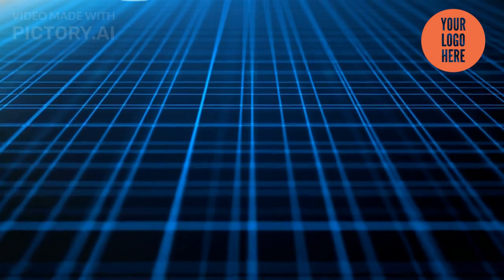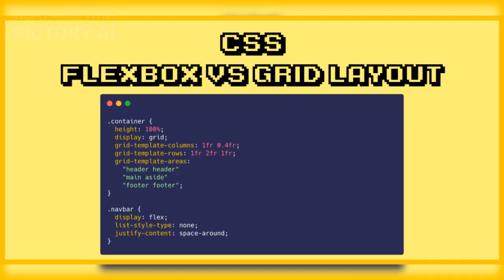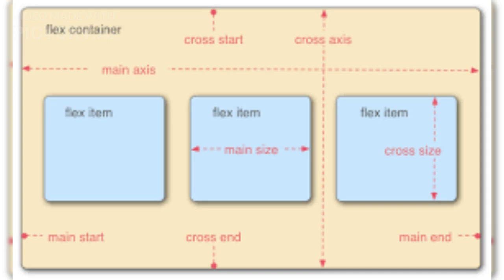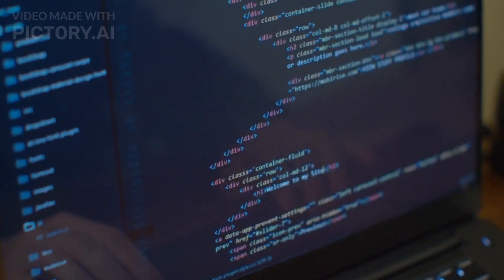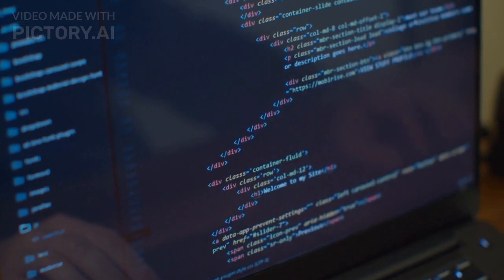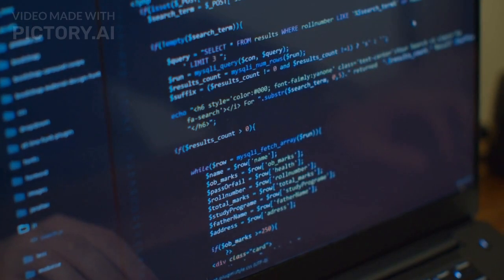Another day, another story. CSS Grid is a layout module in CSS that allows web developers to create complex, two-dimensional grid layouts with ease. It allows for precise control over the positioning and sizing of elements on a web page.